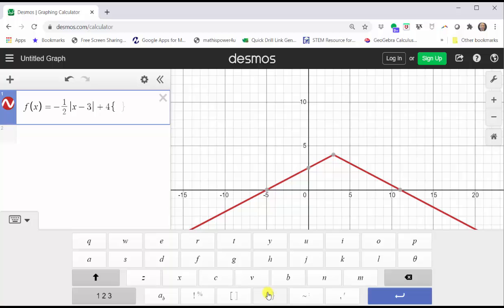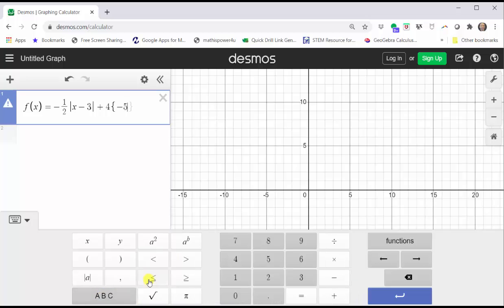And then we enter the compound inequality, which is negative five, to go back to the number keypad. Here we have less than or equal to x, less than or equal to 11. And notice now we only have the graph over the closed interval from negative five to 11.